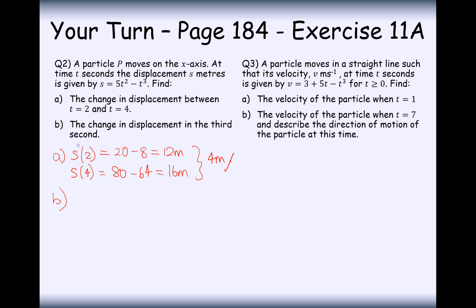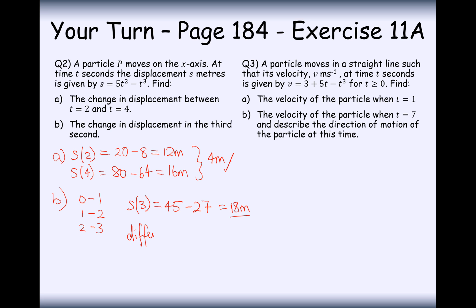Part B: find the change in displacement in the third second. The third second runs from t equals 2 to t equals 3, so we need the difference between those displacements. We already have 12 metres at t equals 2. At t equals 3: 9 times 5 is 45, take away 27, giving 18 metres. The difference is 18 take away 12, which is 6 metres.